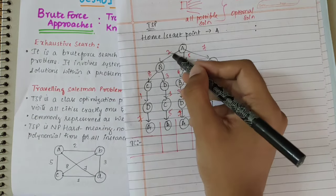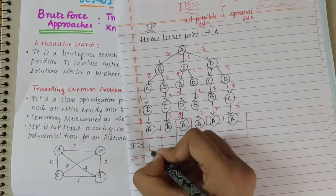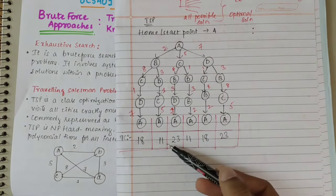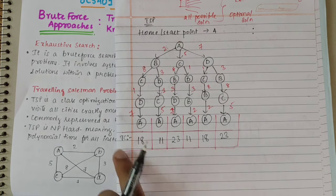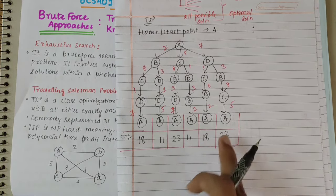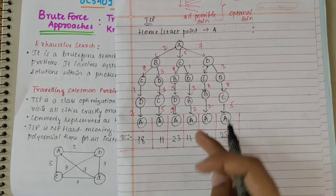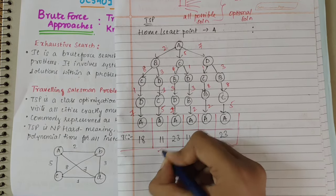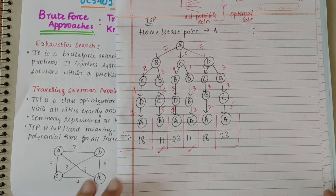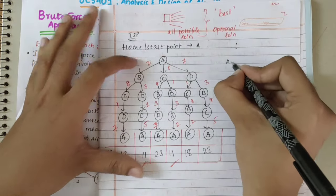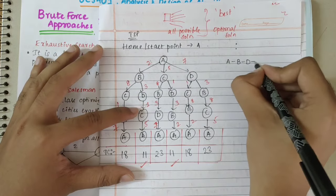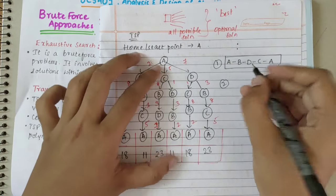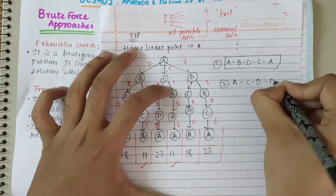Calculating the total costs for each path: A→B→C→D→A gives 2+8+1+7 = 18; A→B→D→C→A gives 2+3+1+5 = 11; A→C→B→D→A gives 5+8+3+7 = 23; A→C→D→B→A gives 5+1+3+2 = 11; A→D→C→B→A = 18; A→D→B→C→A = 23. The least cost paths are A→B→D→C→A and A→C→D→B→A, both with a total distance of 11, which are the optimal solutions.